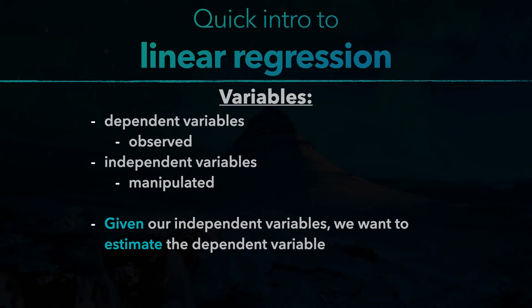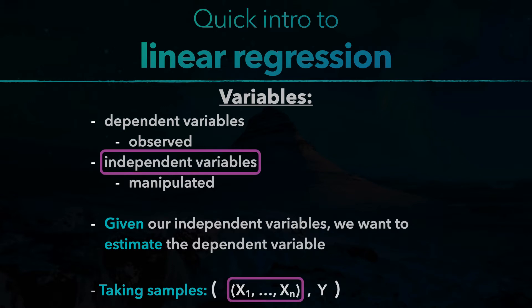Or, when taking samples, which are written down like this, we have a vector of our independent variables as the things that we manipulated and the dependent variable as what we observed.